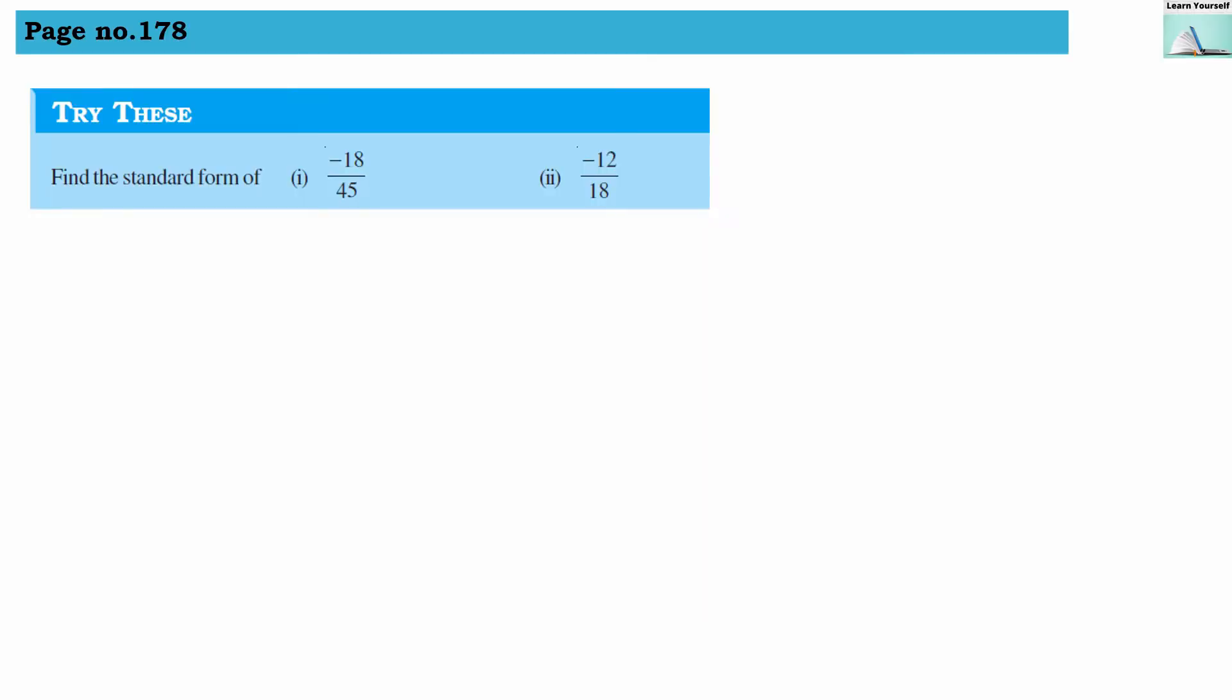Try these sums from page number 178. Find the standard form. The meaning of standard form is we have to reduce this term to its lowest, so we have to represent this rational number into its lowest form.